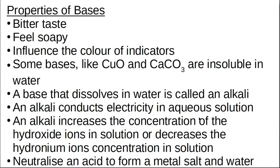An alkali is an electrolyte. An alkali increases the concentration of hydroxide ions (OH⁻) in solution, or decreases the hydronium ion concentration. If you add hydroxide ions to water where there are some hydronium ions, the hydroxide ions will bond with the hydronium ions to give back water again. So an alkali increases OH⁻ concentration and simultaneously decreases hydronium ion concentration.